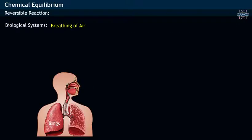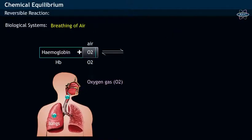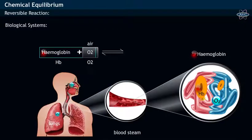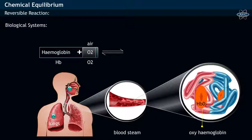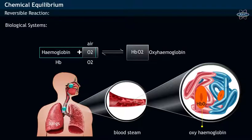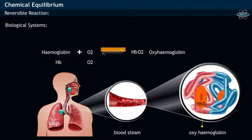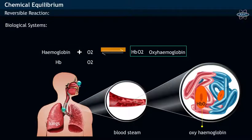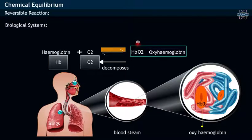For example, when humans breathe air, the oxygen present in air and hemoglobin present in blood, acting as reactants, combine with each other and thereby form a product oxyhemoglobin, represented as HbO2. This is a forward reaction. Simultaneously, the product oxyhemoglobin immediately decomposes back into the reactants hemoglobin and oxygen.